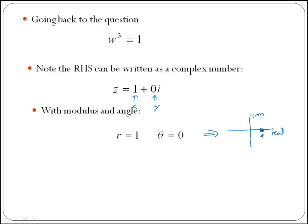That's where my complex number is. Therefore, the modulus is the length of the complex number, which is 1. And then the angle, in this case, is 0. So with the modulus and the angle, we can write our number 1 plus 0i in exponential or polar form.